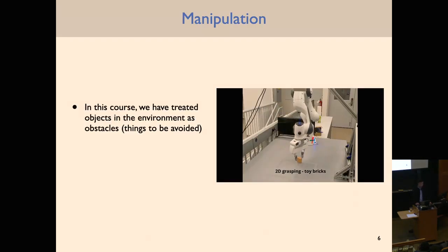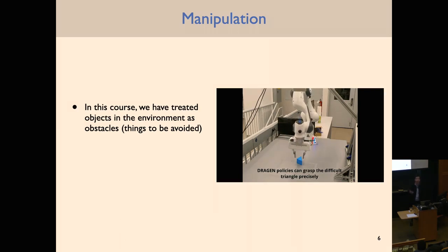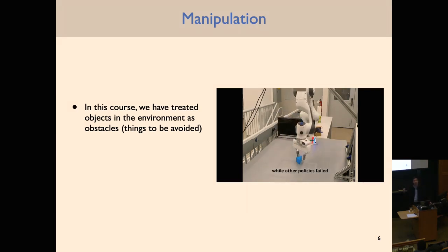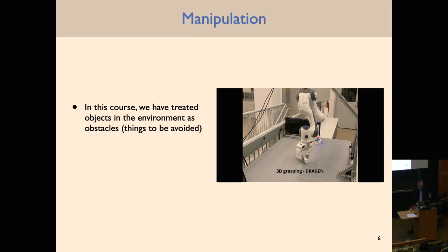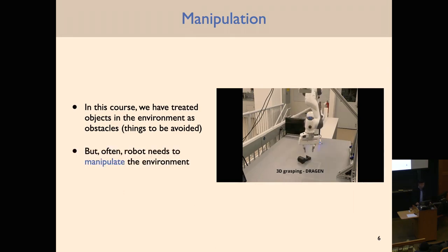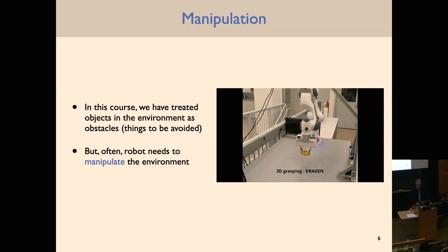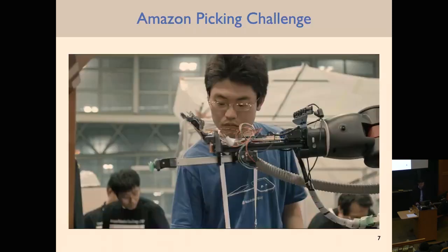In this course, we've mostly thought about objects in the world as things to be avoided — the final project is based on the premise that you want your drone to get from point A to point B without colliding with obstacles. But often, objects are not things to be avoided but rather things to be manipulated. This is a major area of research in robotics and has been for many decades, continuing today.